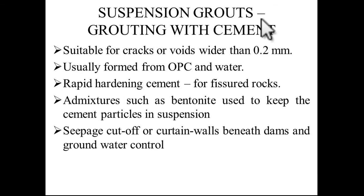Suspension grout — grouting with cement: suitable for cracks or voids wider than 0.2 mm. Usually formed from OPC and water. Rapid hardening cement is used for fissured rocks. These are different types of cement used for this purpose. Admixtures such as bentonite are used to keep the cement particles in suspension. Applications include seepage cut-off for curtain walls beneath dams and ground water control.